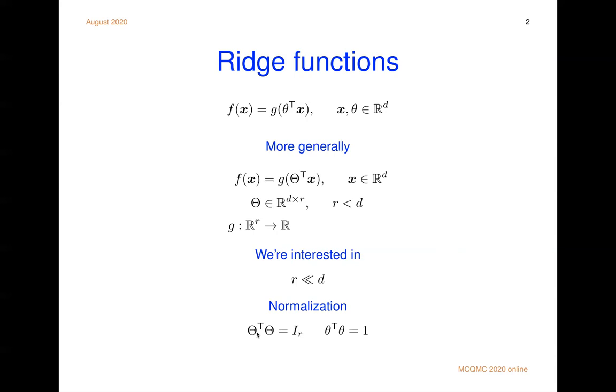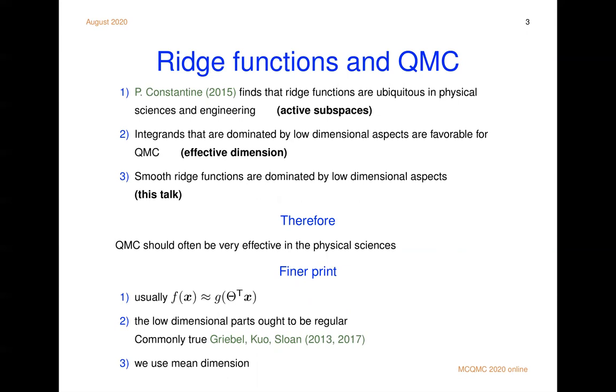Ridge functions are pretty good news for the quasi Monte Carlo world. There's work by Paul Constantine on active subspaces. He has a monograph from 2015. What Paul finds is that ridge functions are ubiquitous in the physical sciences and engineering. Somebody works really hard to make a function with dozens or hundreds of variables in their computer. Paul then finds it's approximately a ridge function with some small number r.